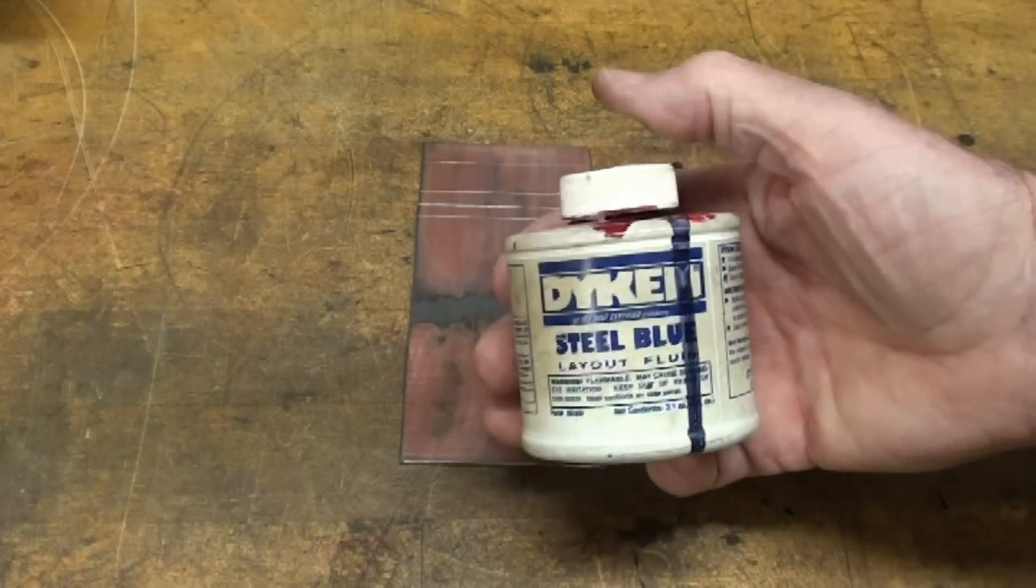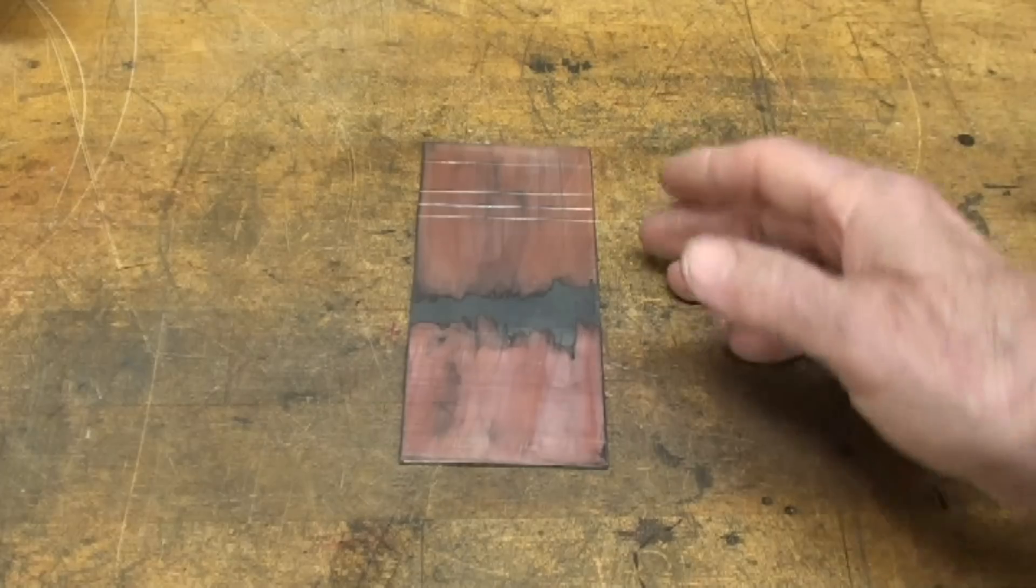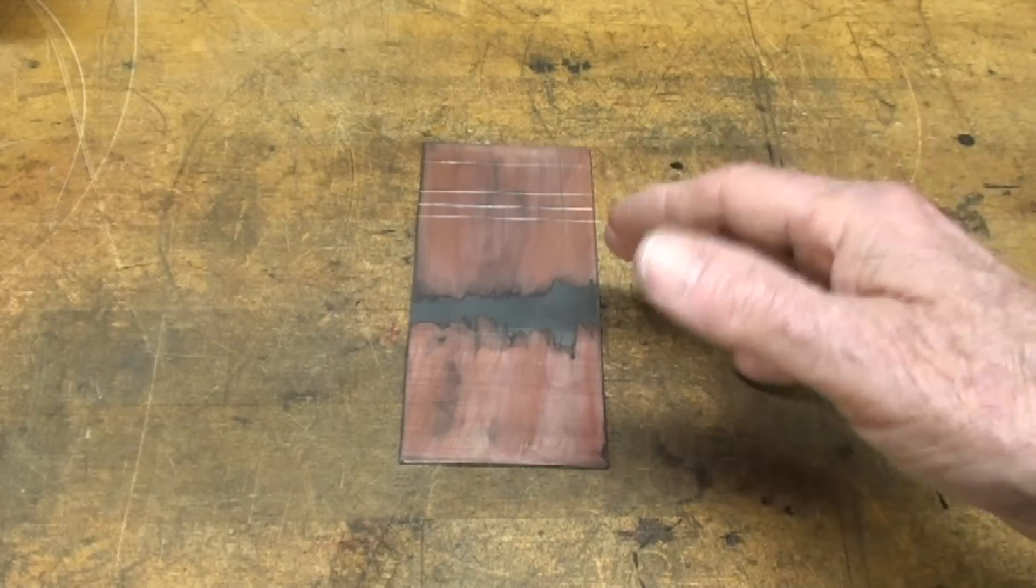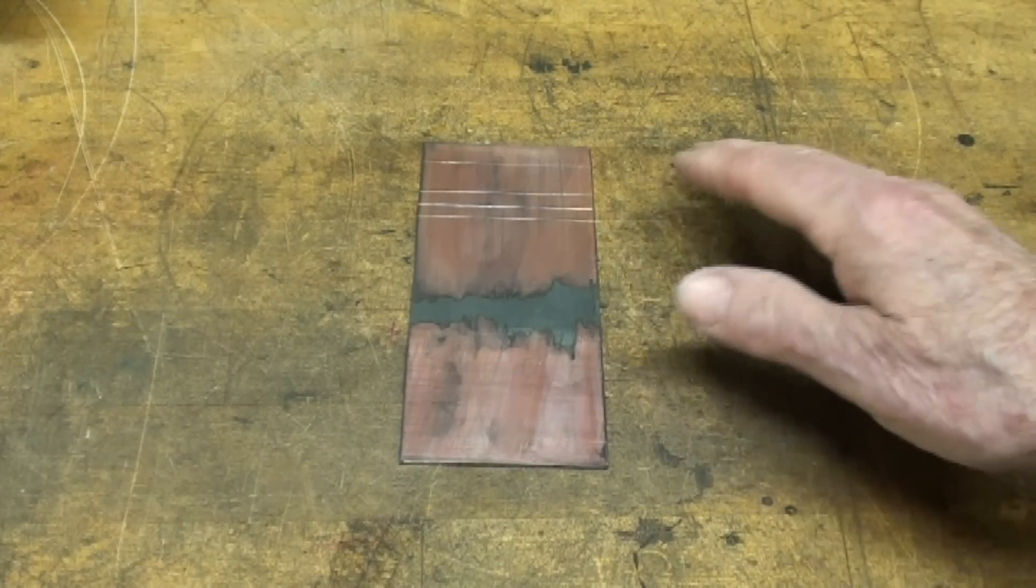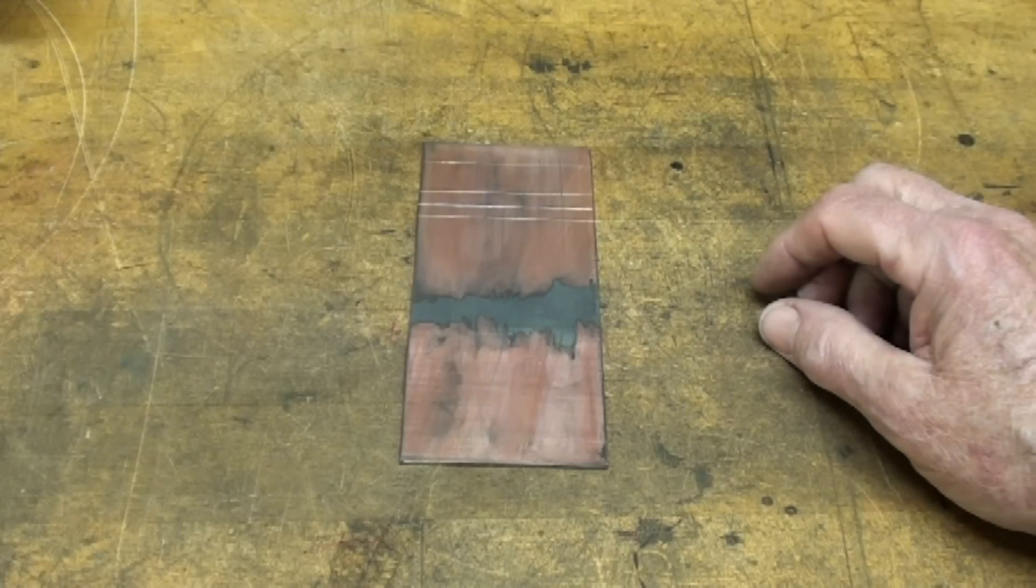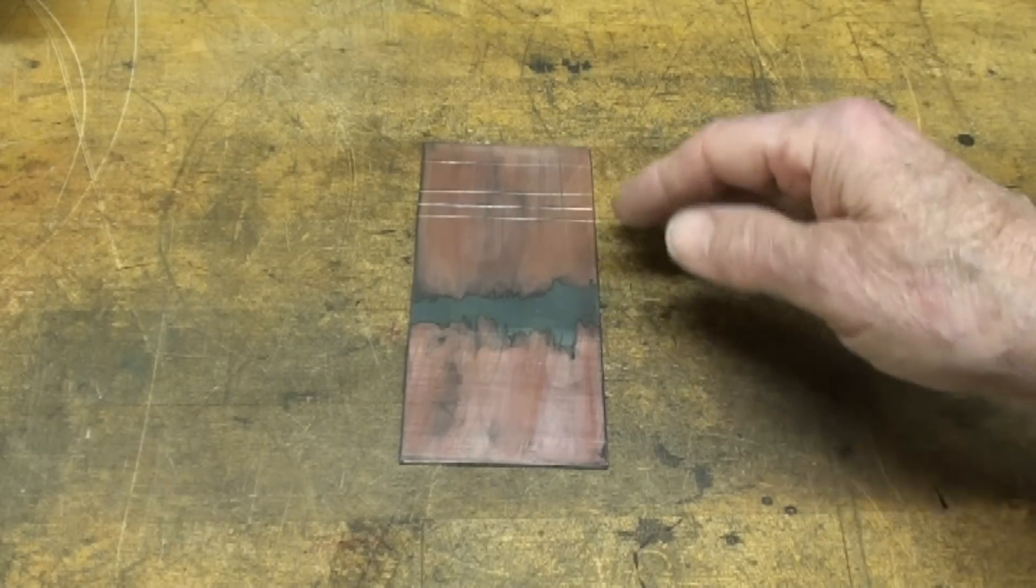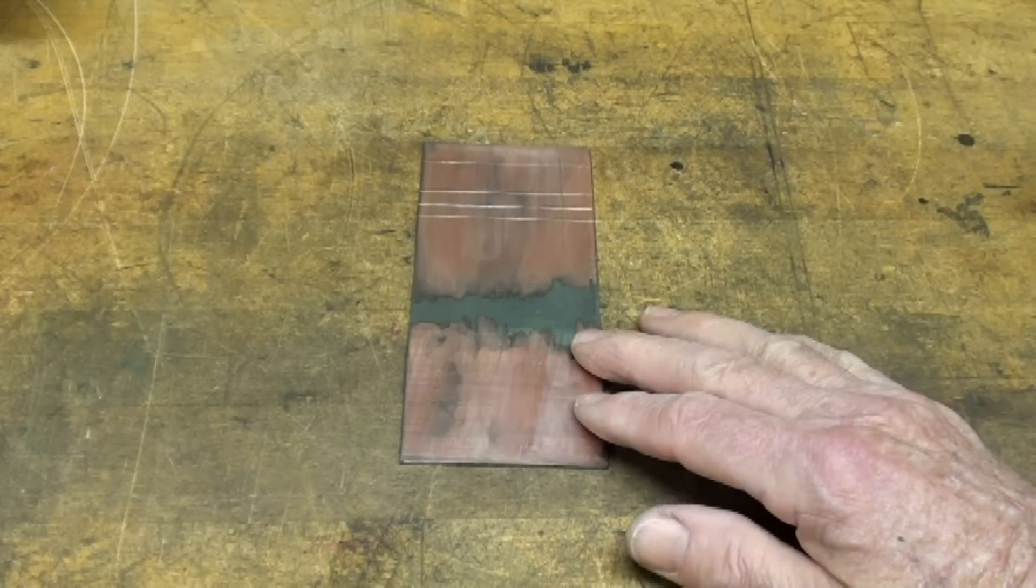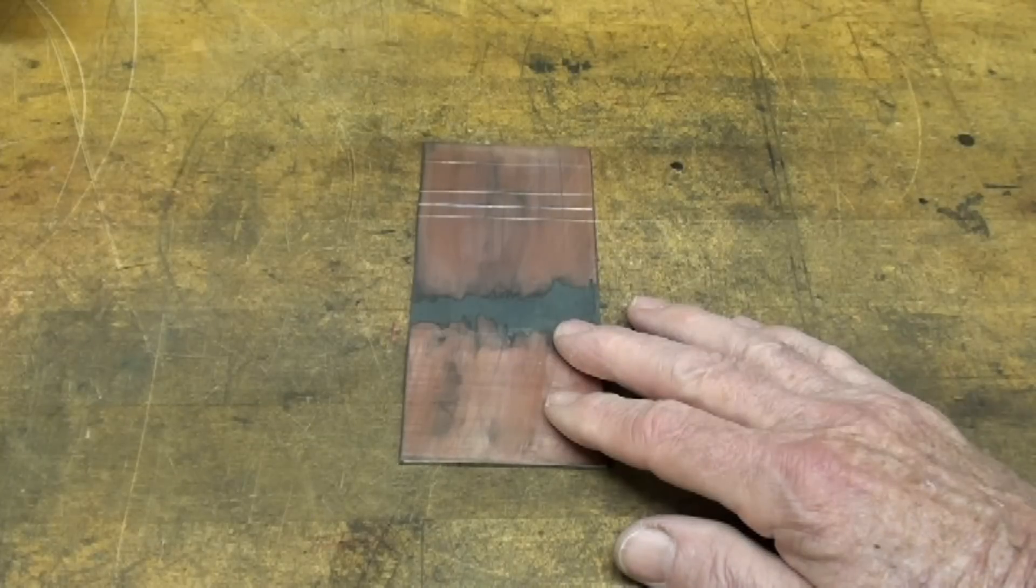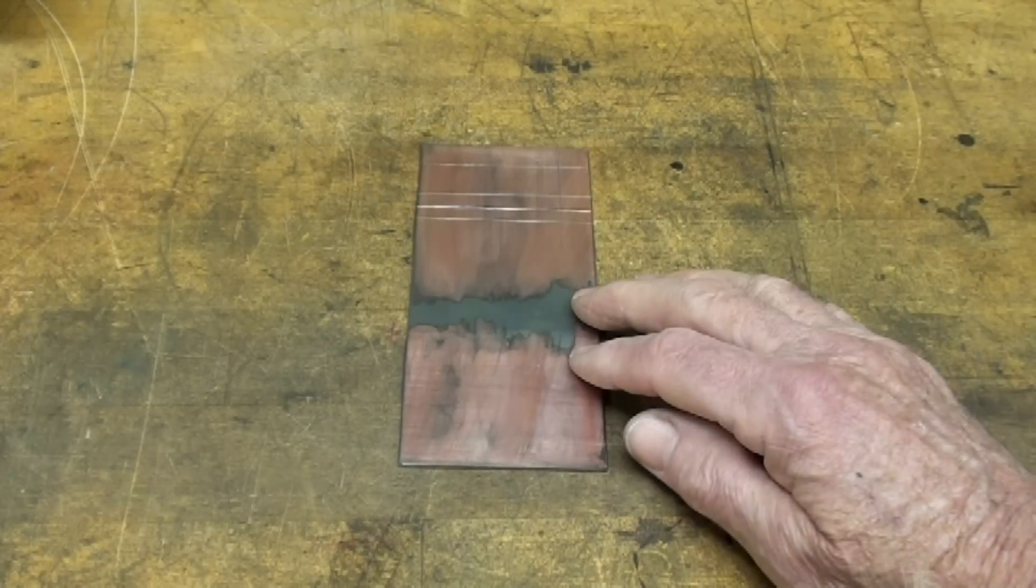This type of product is relatively new, within the last 60 or 70 years probably, and not everybody had it. A lot of machinists made up their own coatings to enhance the work so you could see the layout lines. Some people used chalk, some used a chalk preparation that used whiting. When I first started teaching, we were still using this in some shops, so I'm going to show you how to make copper sulfate layout fluid.